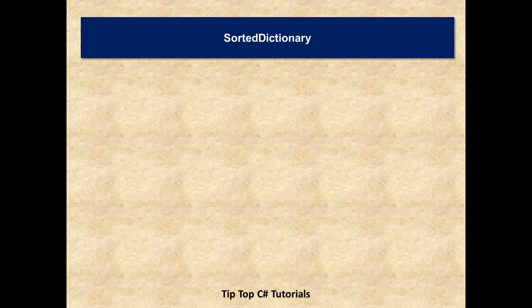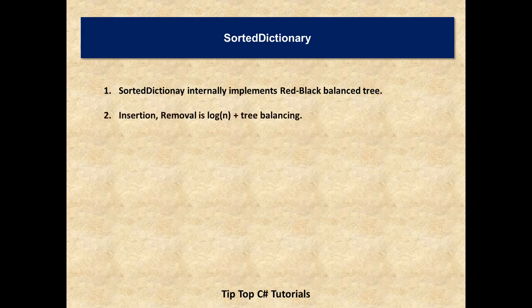Moving on. We are done with the normal dictionary implementation. The next one that we want to look at is sorted dictionary. Sorted dictionary internally implements red black balance tree. Insertion and removal is log n plus tree balancing. Retrieval and accessing of key value pair in sorted dictionary is always log n.